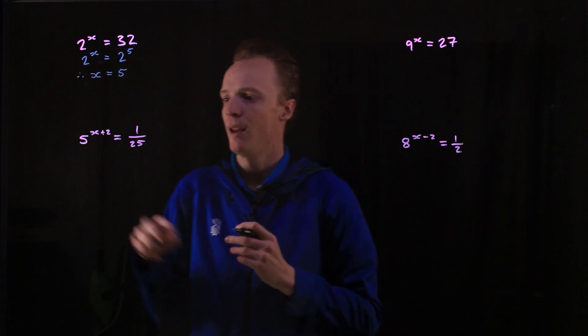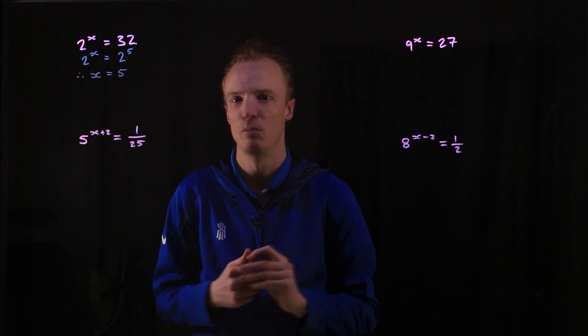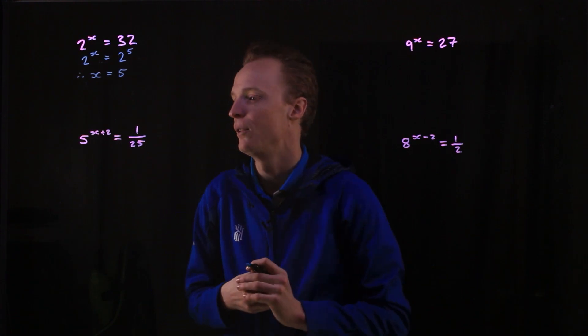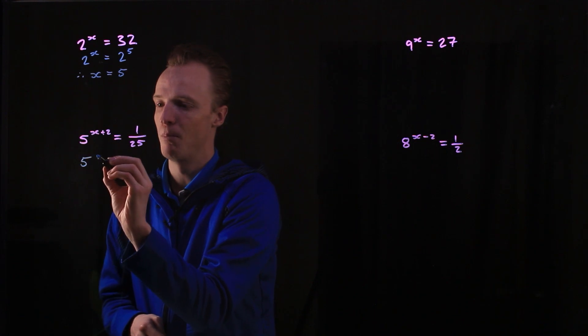If we apply that logic over here as well, we can also do it when our number is a fraction because remember they're just negative indices. So if I'm looking at this, I'm going to rewrite this with the base of 5.